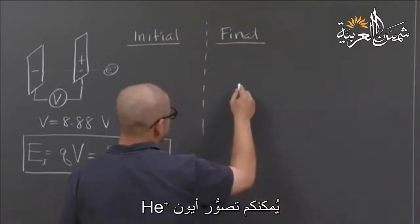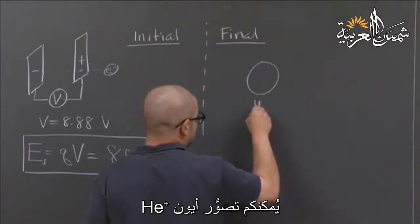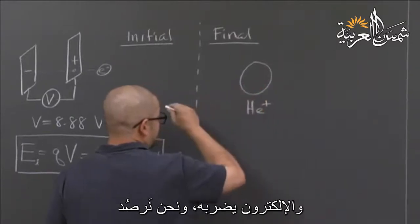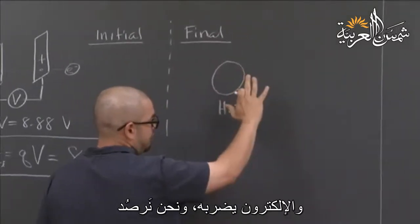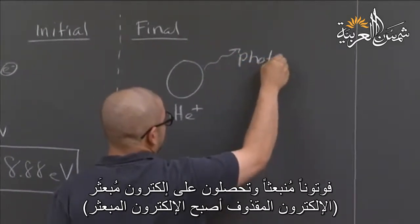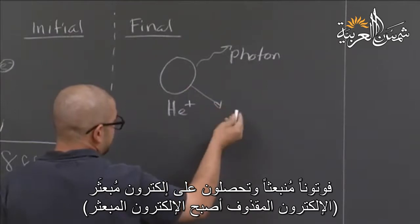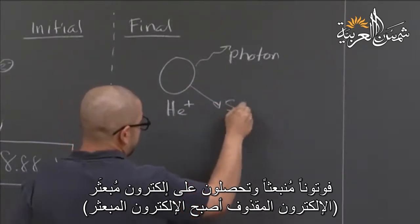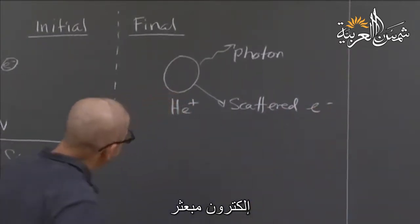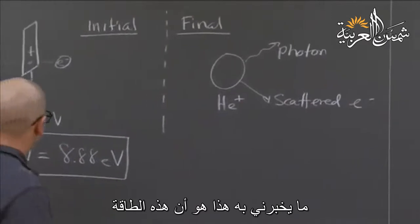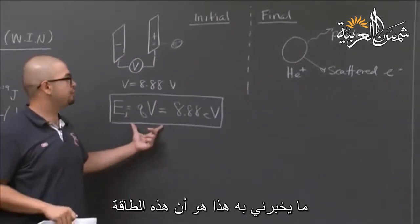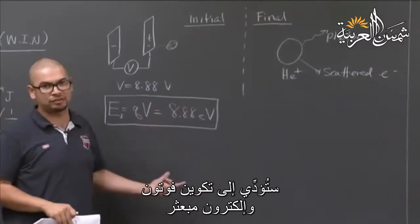In my final image, I can imagine a helium plus atom. The electron strikes the helium plus atom, and we detect a photon. You also get a scattered electron — that's what the problem says. So this energy is now going into creating a photon and scattering an electron from your atom.